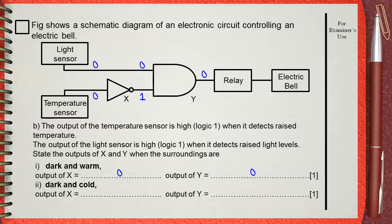So the answer will be, output of X, the NOT gate, will be one. Output of Y, the AND gate, will be zero.